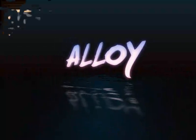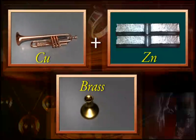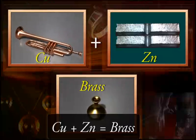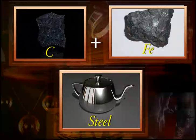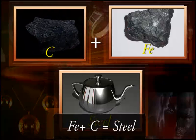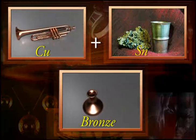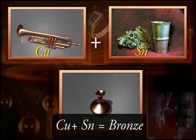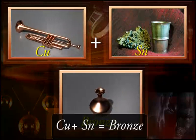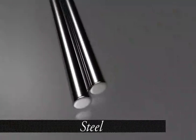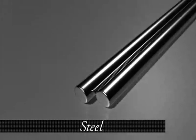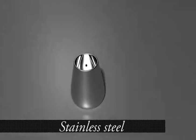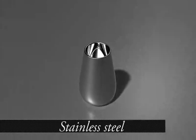An alloy is a homogeneous mixture of two or more metals, or of a metal and a non-metal, mixed in fixed proportion by mass in their molten states. Alloying is a very good method of improving the properties of a metal, and we can achieve the desired properties by using this method.